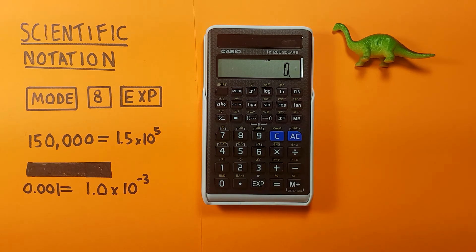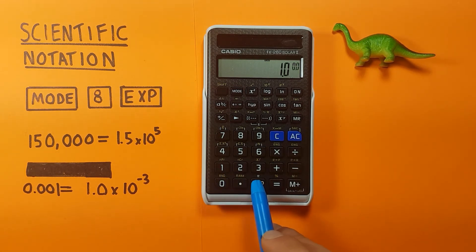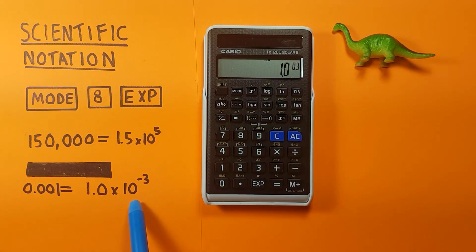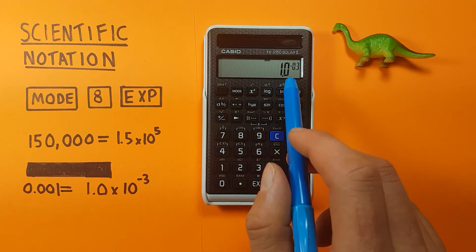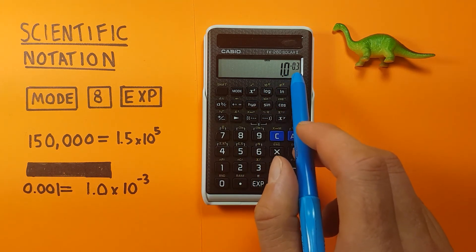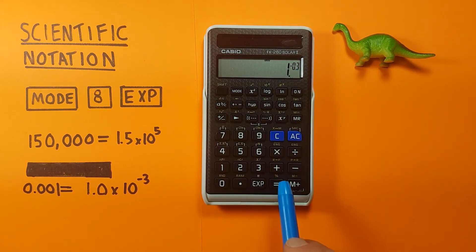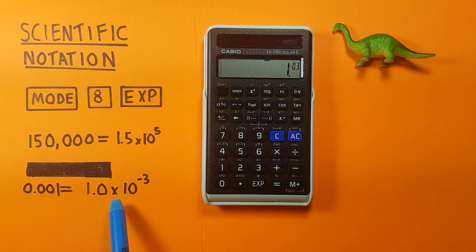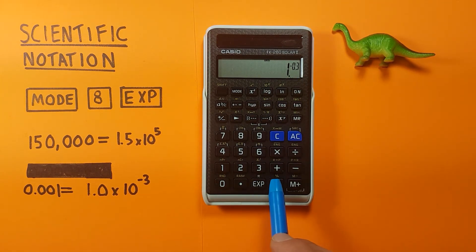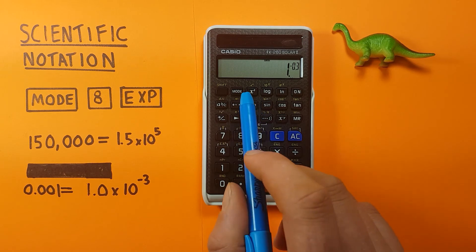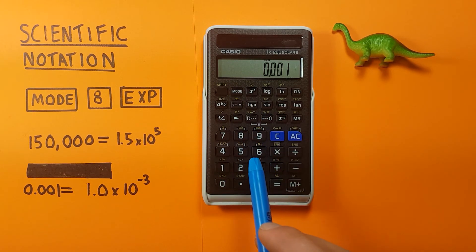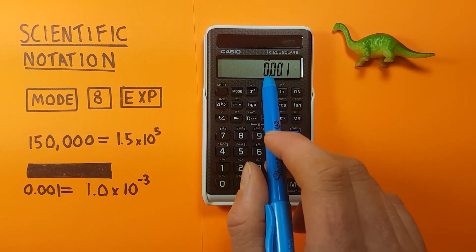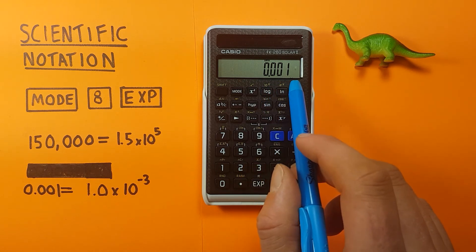We can also enter this using the EXP key. If we have 1.0 EXP 3, but since this is a small number we use negative 3. There we go — 1.0 times 10 to the negative 3 equals, which gives us 1 times 10 to the negative 3. Then we can press mode 9 and have this display as 0.001.